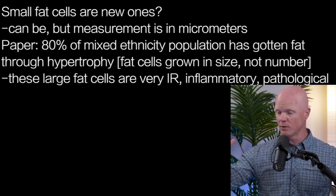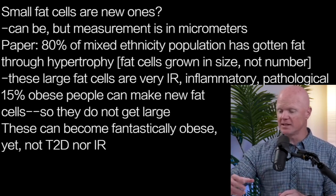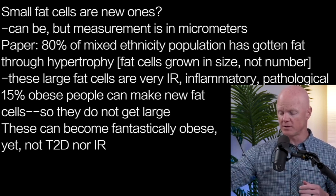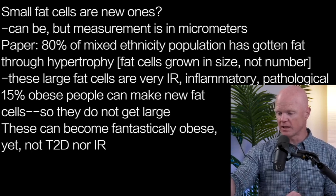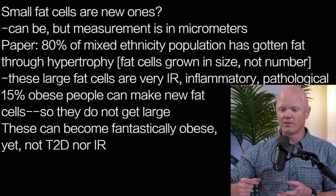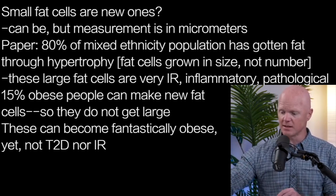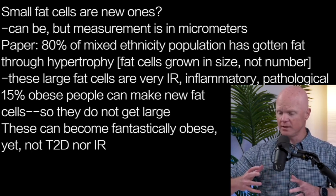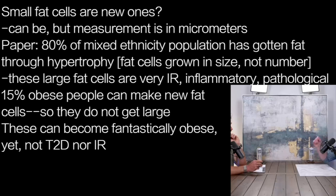However, a small fat cell — about 15 percent of people who become obese — have this genetic ability to continue to make new fat cells. Those would be younger fat cells that haven't had time to get big, and they also don't have the metabolic pressure to get big, because every time the fat cell starts to get a little growth pressure, it recruits a new fat cell, so no fat cell ever gets too big. These are the people who paradoxically can become fantastically obese and yet still not become type 2 diabetic and insulin resistant — the people they make TV shows about. Most people around the entire world could never get to 600 pounds.